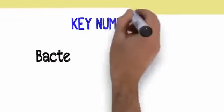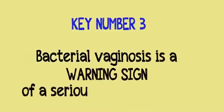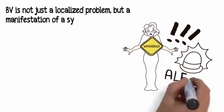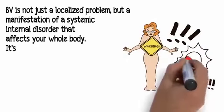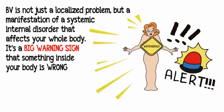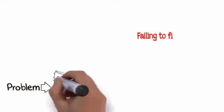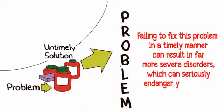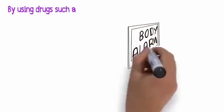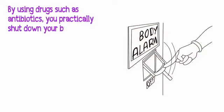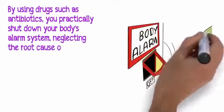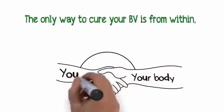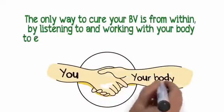Key number three: Bacterial vaginosis is a warning sign of a serious inner imbalance. BV is not just a localized problem but a manifestation of a systemic internal disorder that affects your whole body. It's a big warning sign that something inside your body is wrong and needs to be corrected. Failing to fix this problem in a timely manner can result in far more severe disorders. By using drugs such as antibiotics, you practically shut down your body's alarm system, neglecting the root cause and making your condition worse in the long run.